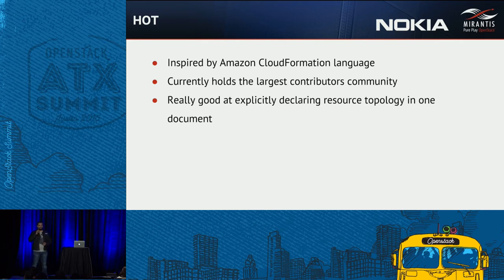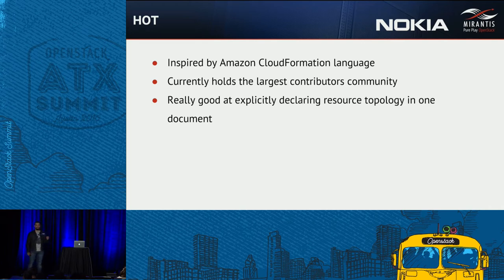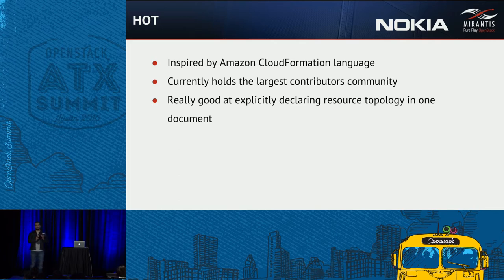One thing Heat is really good at, and why Murano uses Heat for resource allocation, is explicitly declaring resource topology — your VMs, networks, drives — and making sure each resource will be allocated. The new convergence feature, which the Heat team is delivering with Mitaka as phase one and Newton as phase two, gives even finer assurance that what you requested will truly be allocated and delivered. Even if it deviates at some point, the state of the stack will eventually converge to what you requested.